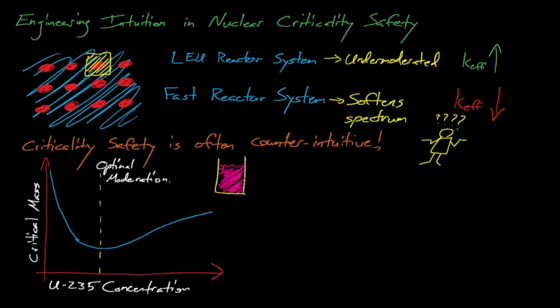If we plot the necessary critical mass for the system against the concentration of U-235 in the solution, then we see that there is some level of optimal moderation that produces the smallest critical mass possible. If we increase the uranium-235 concentration beyond this optimal point, then the system is under-moderated. If we decrease the uranium-235 concentration below this point, then our system is over-moderated.